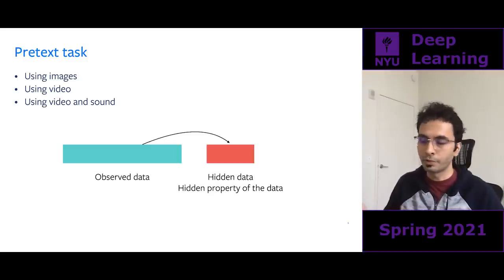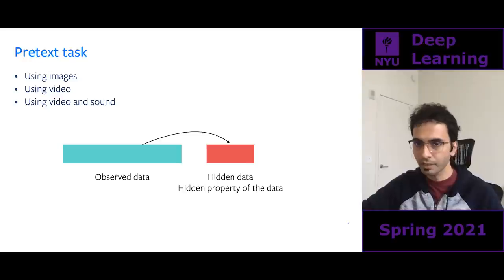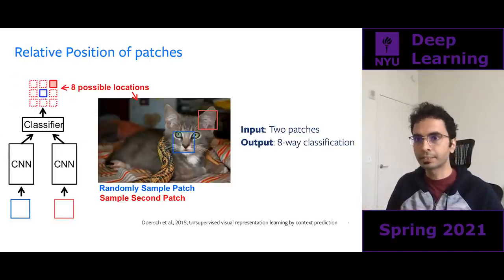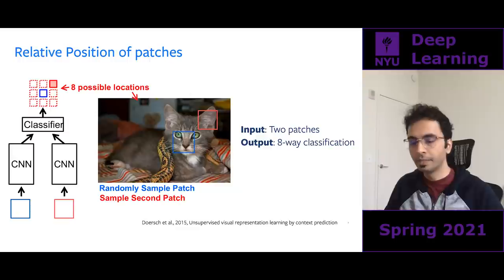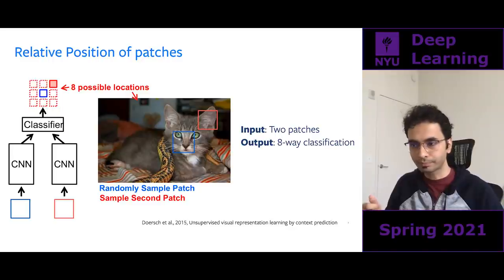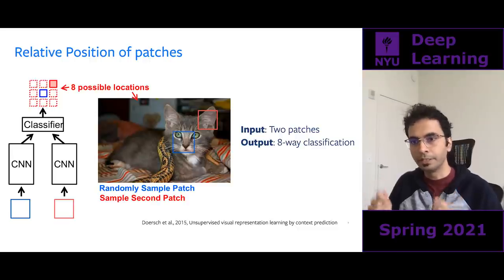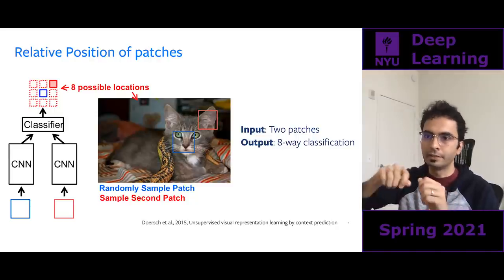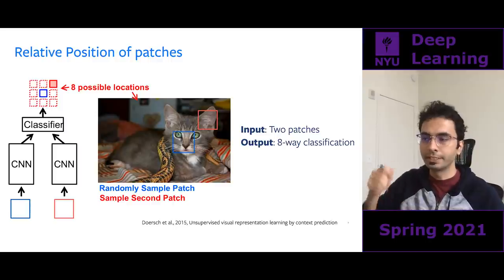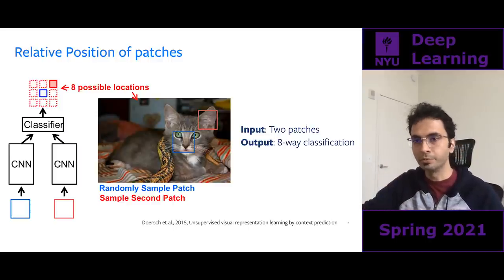A pretext task is a task you solve just to learn a feature representation — it's often not a real task. You take observed data and predict properties about hidden data. It's not the task you really care about; the only reason you're solving it is to learn representations. One fairly popular pretext task for images is predicting the relative position of patches. You take two image patches — a blue patch and a red patch — sample them randomly on an image, then predict the relative position of the red patch given the blue patch.